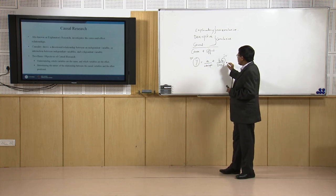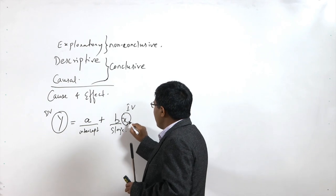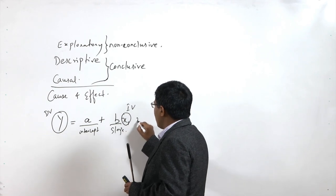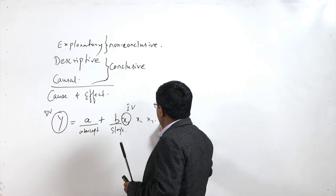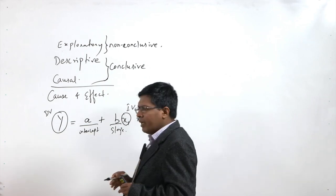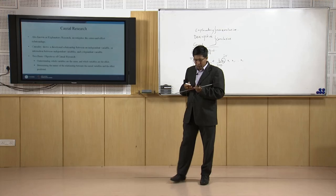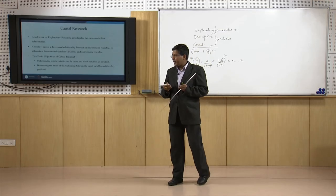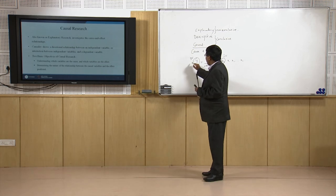Suppose there is only one variable x, but there could be more than one: x1, x2, x3 going on till xn. These variables will have an effect on the dependent variable y.